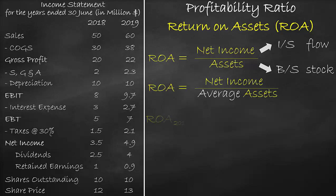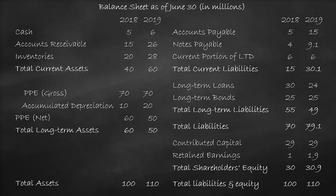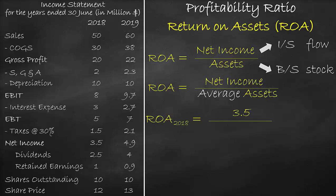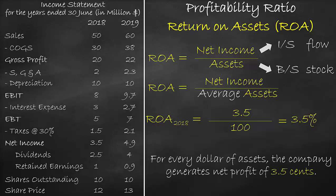Let's calculate ROA for the year 2018. Net income is equal to 3.5 million. Let's look at the balance sheet for assets. Please note that 2018 is the first year of operations, so we do not have average assets because we do not have the previous year. In 2018 we have assets of 100 million dollars, so in our formula we will divide by 100 million. This is equal to 3.5%. The unit of ROA is a percentage, meaning that for every dollar of assets the company generates a net profit of 3.5 cents.